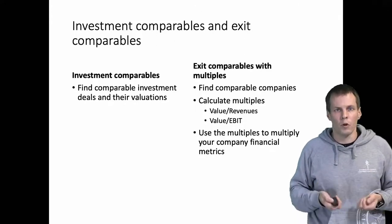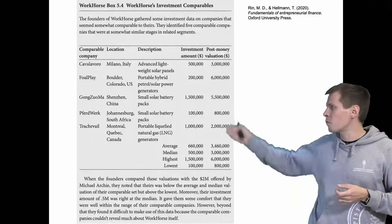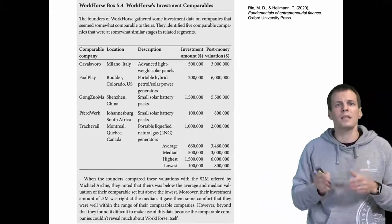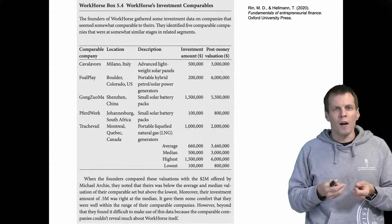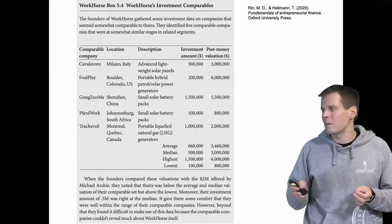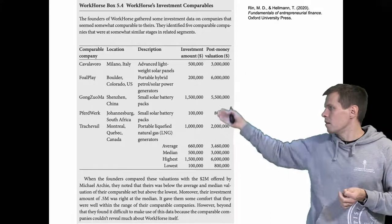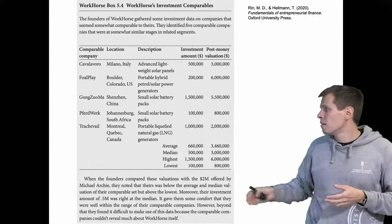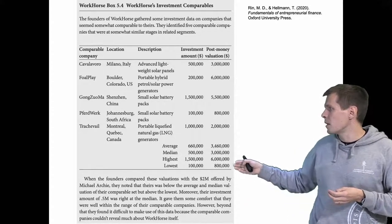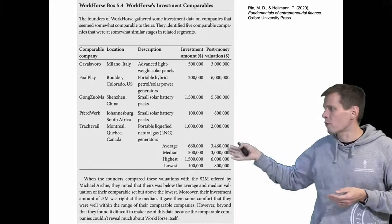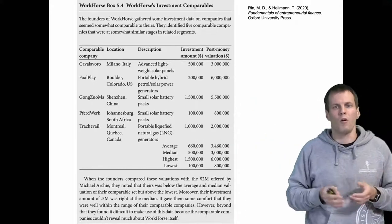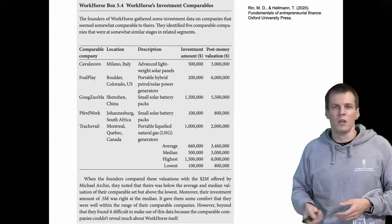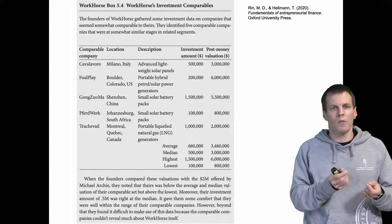Let's look at a detailed example from Rinn and Helman's book. For investment comparables, you look for comparable investments that are similar to the case company being discussed. The valuations are roughly in the 3 million ballpark — some higher, some lower — and you can infer that a 2 million valuation is a bit lower than the average deal but still in the right ballpark.